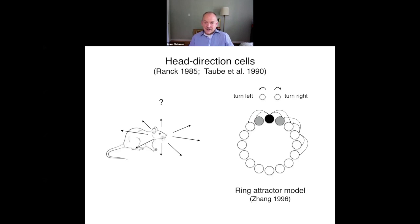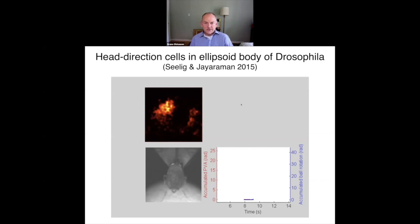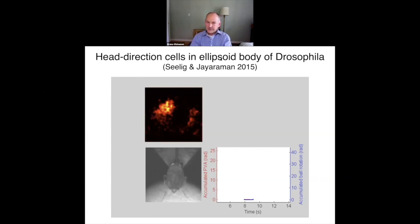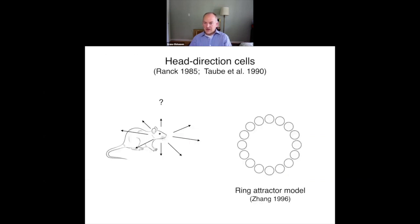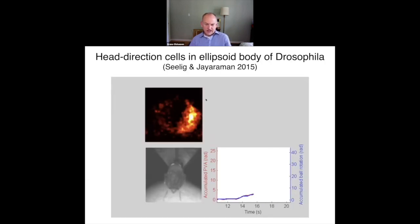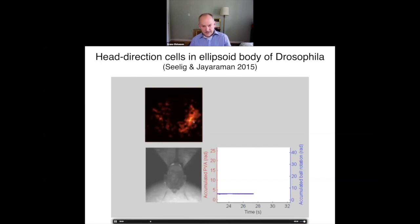These have been studied extensively in rats, and about five years ago, in Vivek Jayaraman's lab at Janelia Farm, a stunning set of experiments showed that fruit flies, Drosophila, actually have these head direction cells as well. Even more surprisingly, they reside in a nucleus called the ellipsoid body — a set of neurons that are literally connected together anatomically in a ring. With calcium imaging, you can see the activity of these neurons change and move around the ring as the fly changes direction in space.